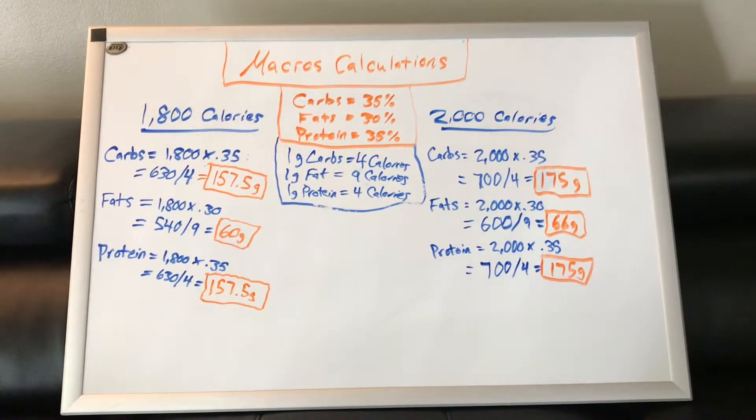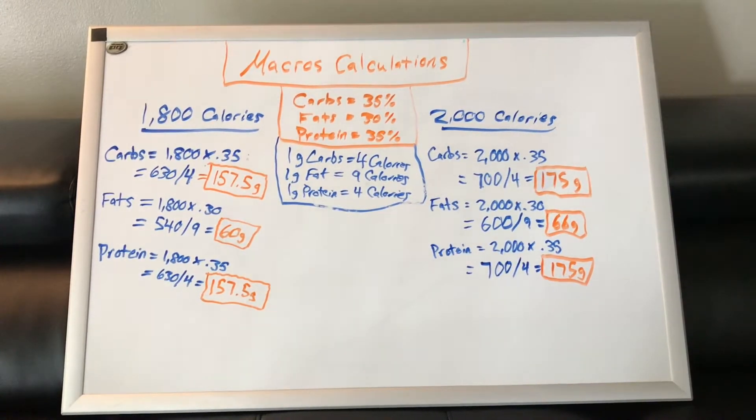I hope this helps you out on how to calculate out your macros. Your first thing you need to do is go to our calorie calculator, use that, pick out what your calorie intake you want it to be, and either pick out the weight loss one or the extreme weight loss one. I recommend starting with the weight loss until your body adapts. And then once you have your calorie intake, just use this video as an example so you can calculate those out.